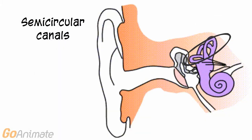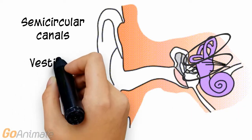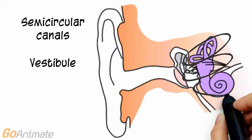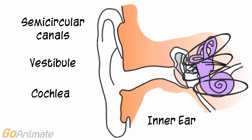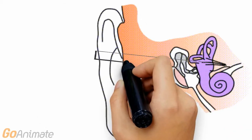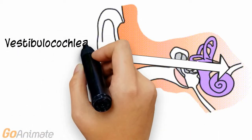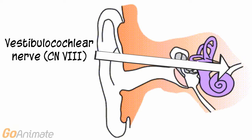The inner ear consists of three main parts: the semicircular canals, the vestibule, and the cochlea. The auditory or vestibulocochlear nerve, cranial nerve 8, carries the information from the inner ear to the brain for processing.